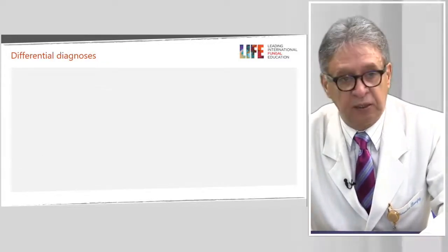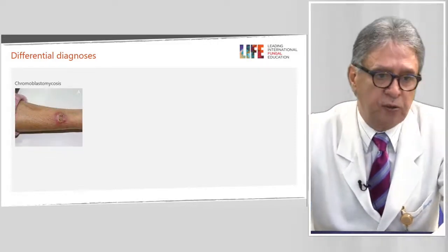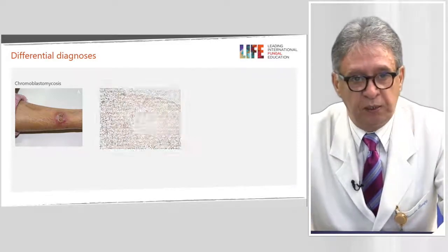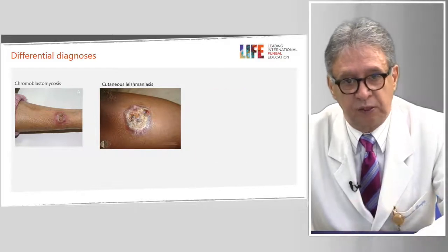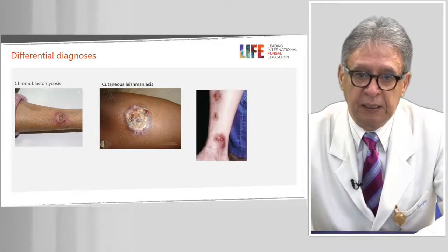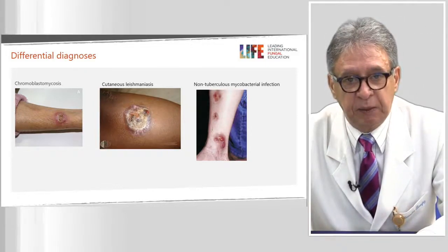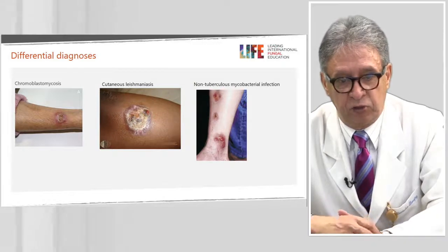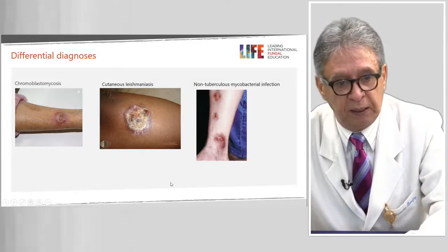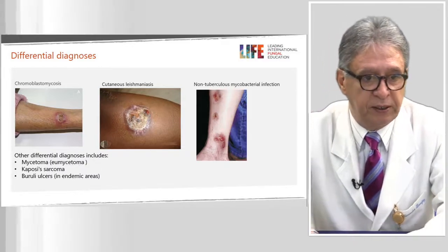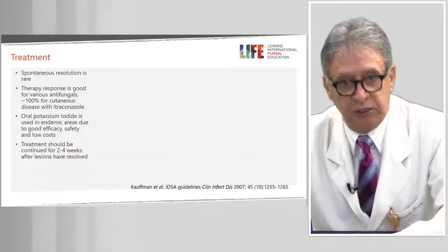Regarding differential diagnosis, keep in mind chromoblastomycosis and cutaneous tuberculosis. If you live in or have been in areas with Leishmania, remember that it is very similar to this disease. For the lymphangitic pattern, keep in mind non-tuberculous mycobacterial infection, especially caused by Mycobacterium marinum. Other differential diagnoses include mycetoma, Kaposi sarcoma, and Buruli ulcers.